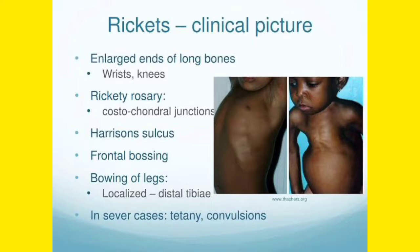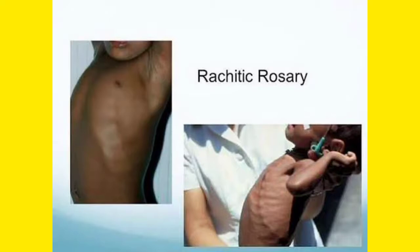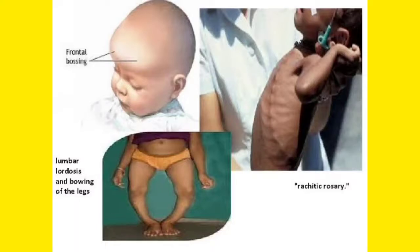Rickety rosary — also called rachitic rosary — shows how the costochondral junction has been widened; it is a very important clinical feature of rickets. In the picture you can see frontal bossing, where the frontal bone is protruding outward. Rachitic rosary and bowing of the legs are also shown, and lumbar lordosis can also be found.